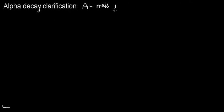It's really important that we know that A means the mass number of the element — or rather, the isotope. Z is the atomic number.